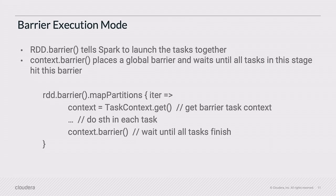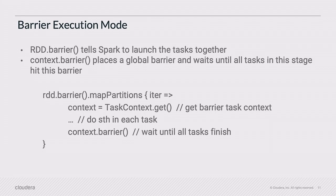So now with this barrier execution mode, you basically use rdd.barrier(). It tells Spark to launch the tasks together. You also have context.barrier(), which places a global barrier and waits until all the tasks in this stage hit it. So basically if you go and map all the partitions, you get your context with tasks via tasks.context. Then you do all the things needed for your deep learning, and in this commented state you wait until all of it is done — until all the tasks finish successfully before continuing on.